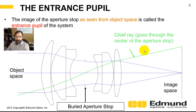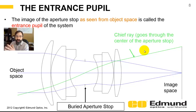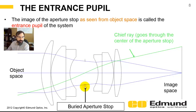Let's talk about the entrance pupil in a double gauss. I like the double gauss because most camera lenses are a derivative of it. The aperture stop is buried in the optical system and usually not near an optical surface, so you can make it an iris to vary your F number. This is the buried aperture stop.